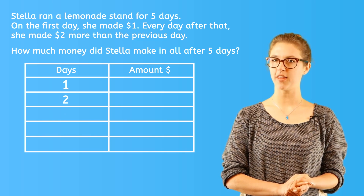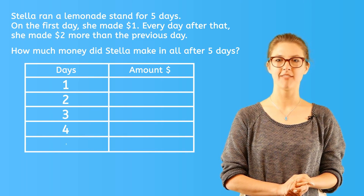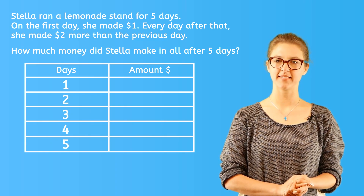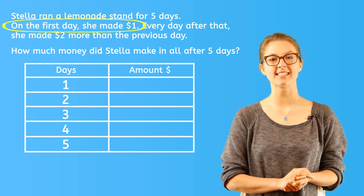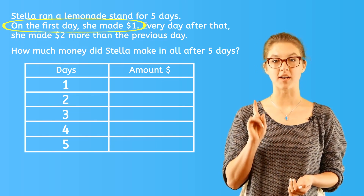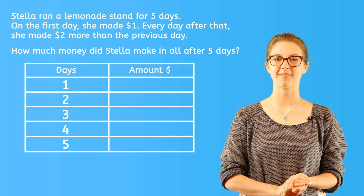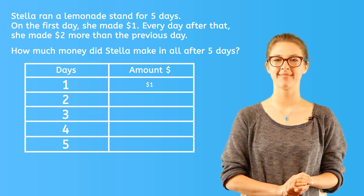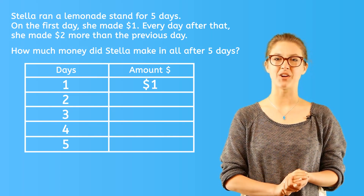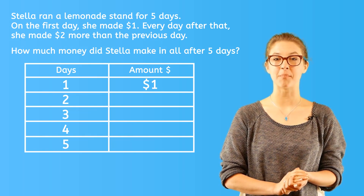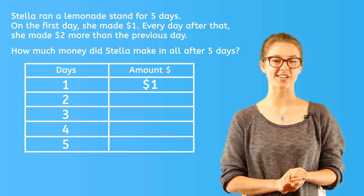Let's list the number of days in the chart: one, two, three, four, five. We know that on the first day, Stella made one dollar. Let's write that next to day one. Now we need to figure out the rest of the pattern to complete the chart and to get our answer.